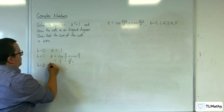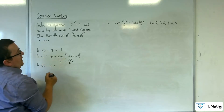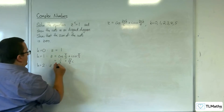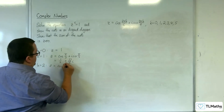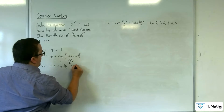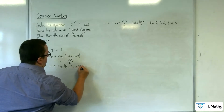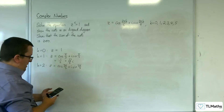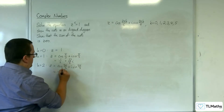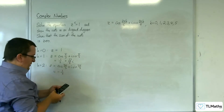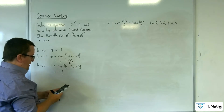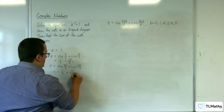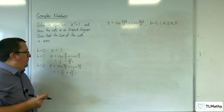When k is equal to 2, we get 4 pi over 6, so 2 pi over 3. So cosine of 2 pi over 3 plus i sine of 2 pi over 3. Cosine of 2 pi over 3 is minus 1 half, and sine of 2 pi over 3 is root 3 over 2, so we get minus 1 half plus root 3 over 2i.